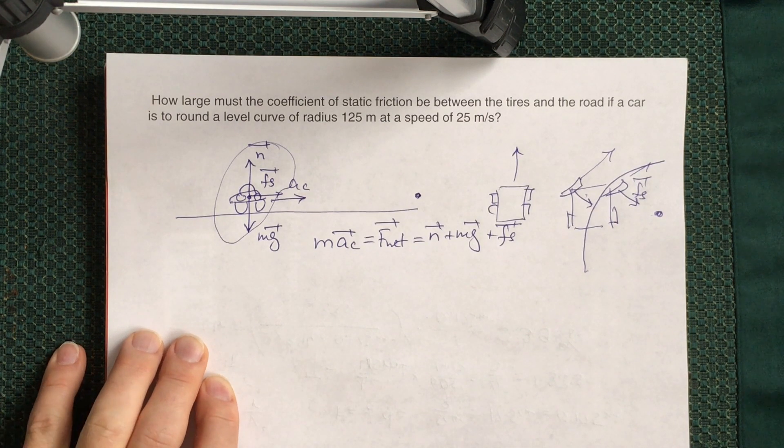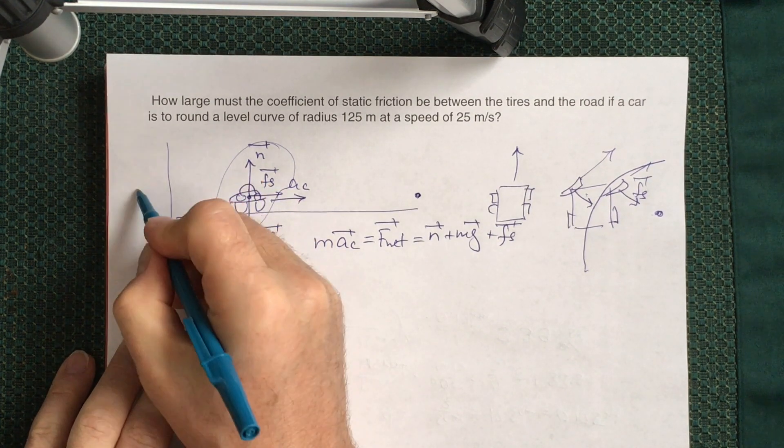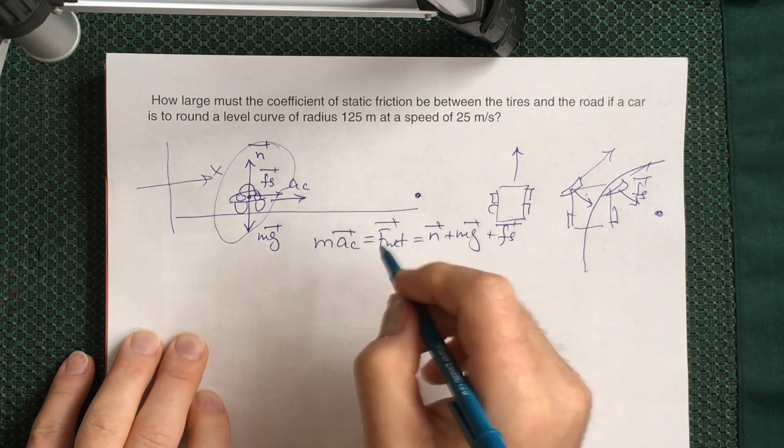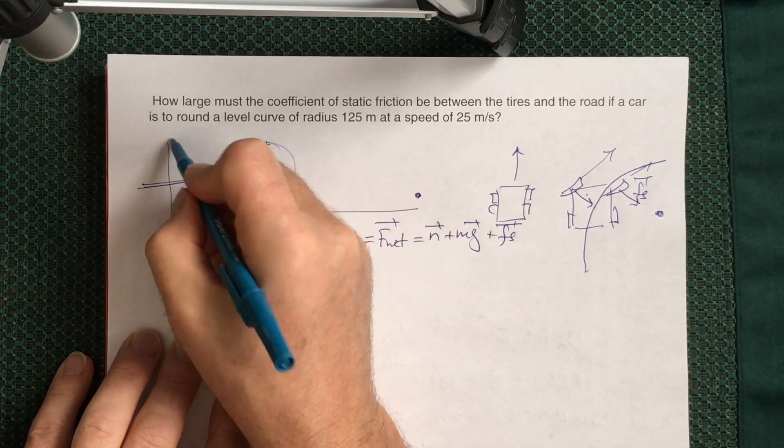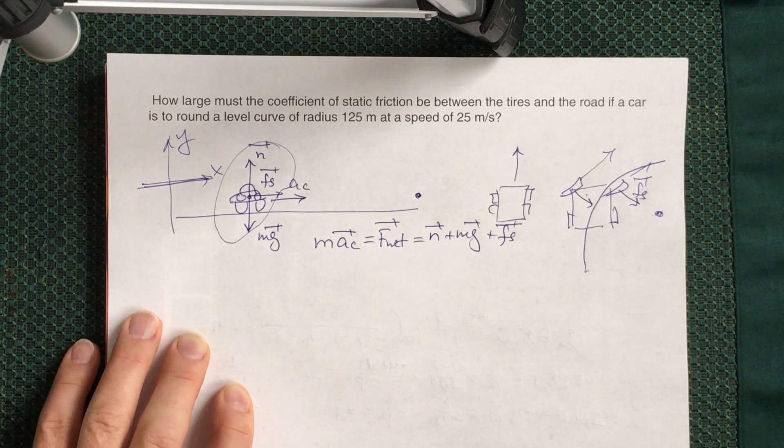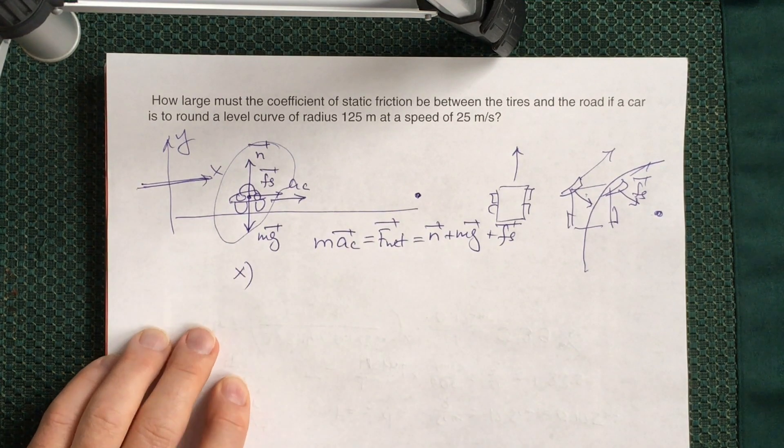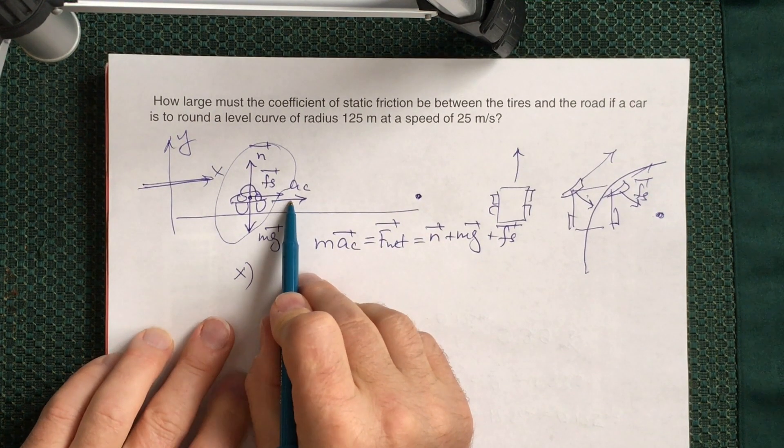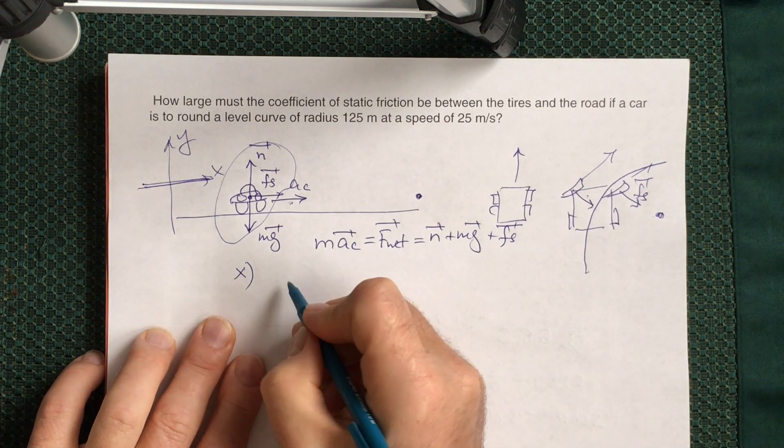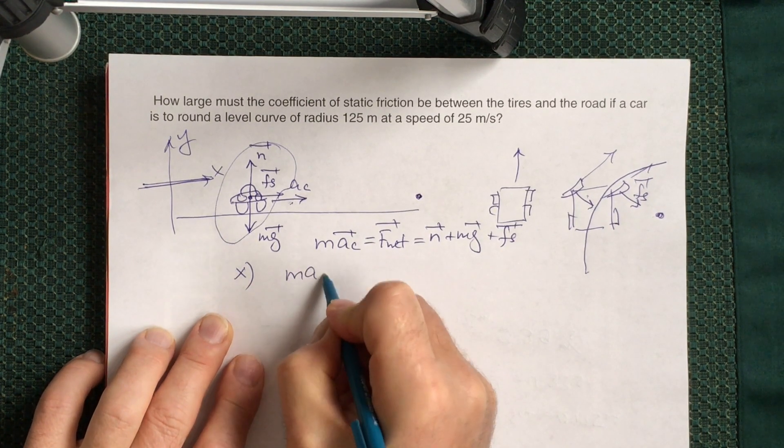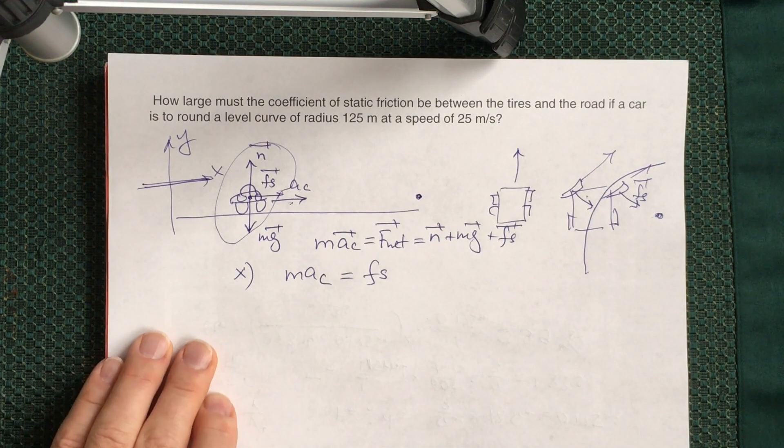To solve this equation we have to split this vector equation into components. So I will introduce two axes: x-axis which points to the center of the circle over which the car moves, and y-axis which is perpendicular. In this case you see that for the x-axis you have horizontal direction for the centripetal acceleration which will be positive. So we have m times a_centripetal equals F_s. F_s has the same direction so it's positive as well.